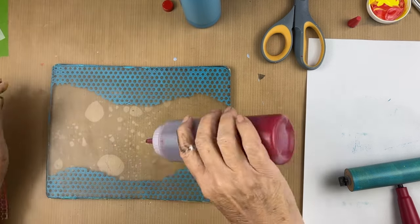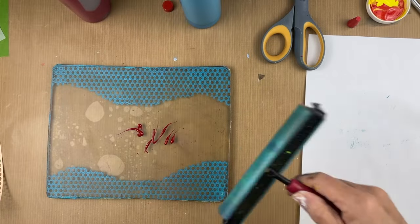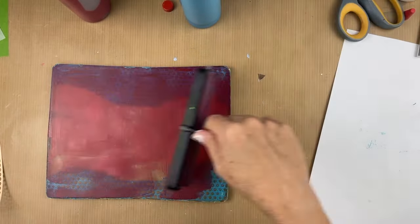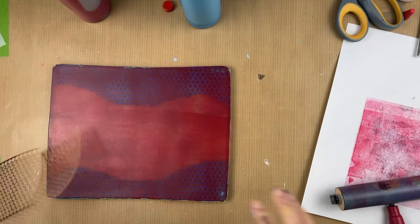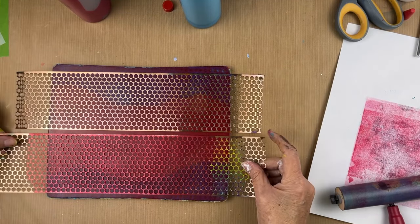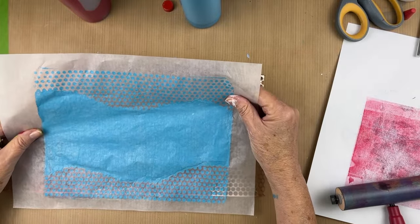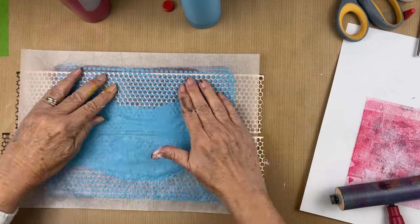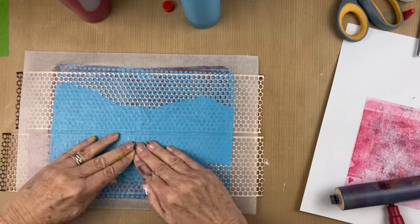I'm going to start once again with some quinacridone red. I think these two colors will look nice together. I'm going to do something a little bit different this time. Instead of just using it as stamp, we're going to overlay it on that other deli sheet. We're probably going to get some subtraction going on here.